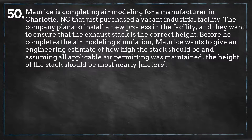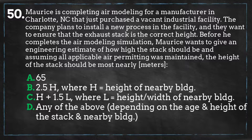Before he completes the air modeling simulation, Maurice wants to give an engineering estimate of how high the stack should be. Assuming all applicable air permitting was maintained, the height of the stack should be most nearly: A) 65, B) 2.5 times the height, C) the height plus 1.5 times the length, or D) any of the above.